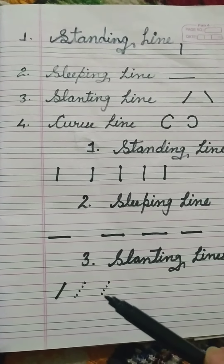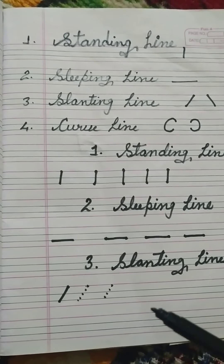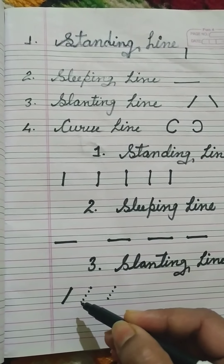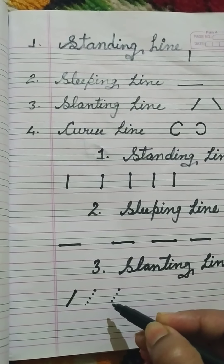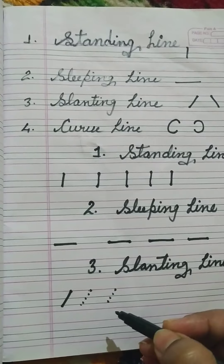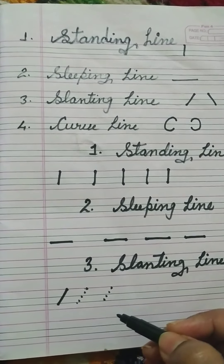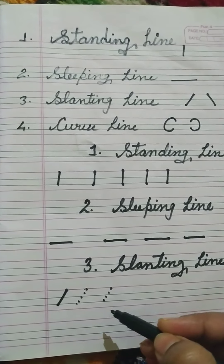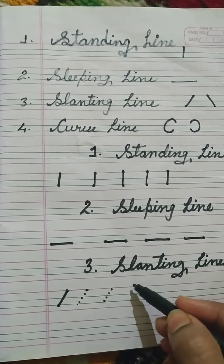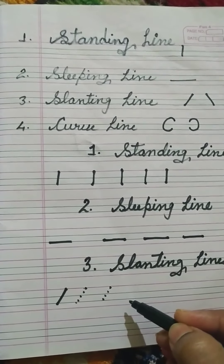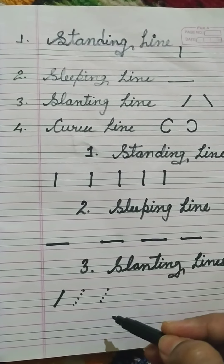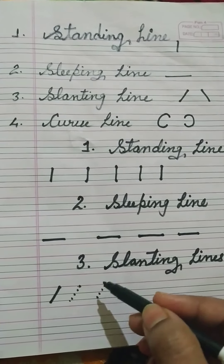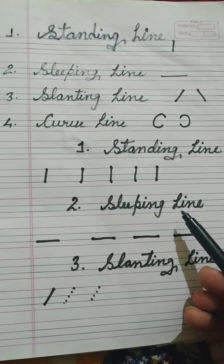One more thing you can do with the students is give some tracing in the copies. This is also available in the books, but in the copies you can also make some tracing lines for the students. In the beginning you can use dots for joining, so tracing is very useful for the students. You can use this pattern for the standing line also and the sleeping line also.